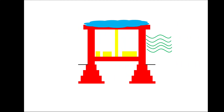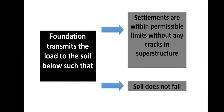In this structure, the dead load is indicated by red color, yellow shows the live load such as partition walls, furniture and fixtures, green waves show the wind load, and blue shows the snow load. All these total loads are meant to be transmitted to the hard strata below by the foundation. The foundation transmits the load to the soil such that settlements are kept within permissible limits and do not cause cracks in the superstructure, and also ensures the soil does not fail.